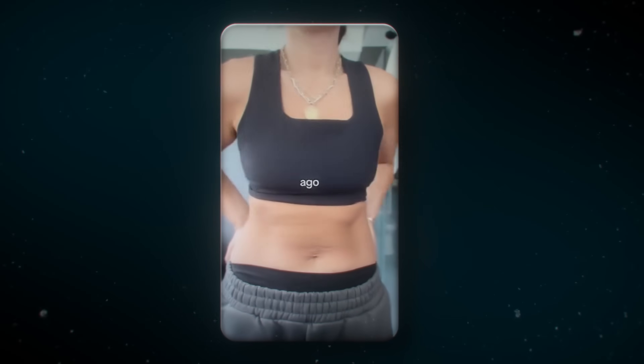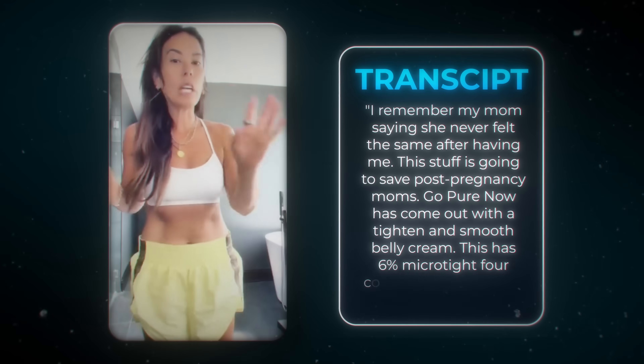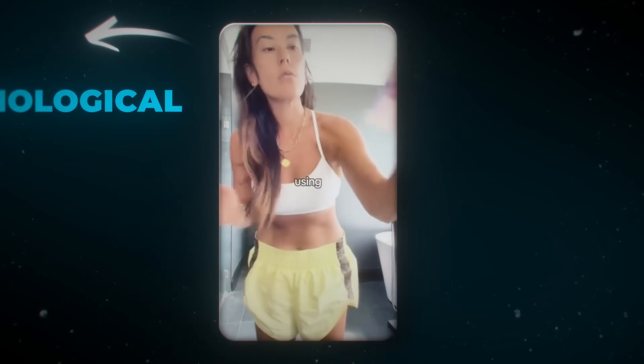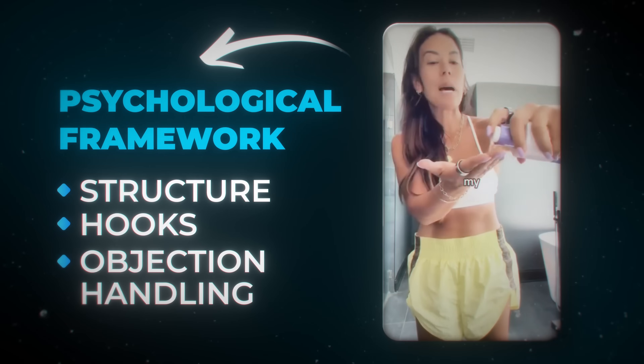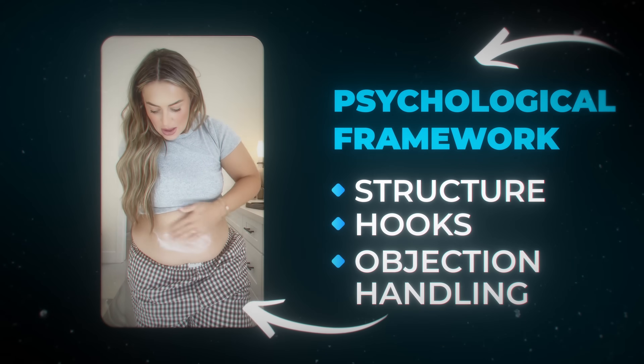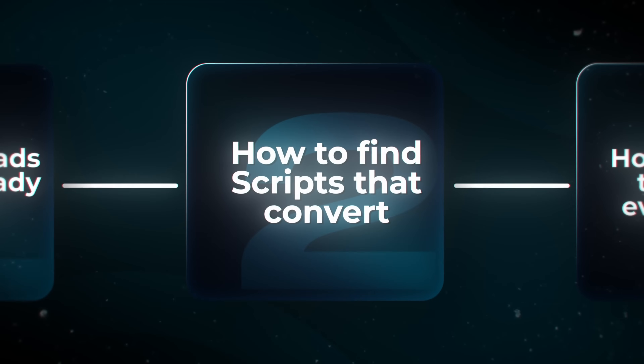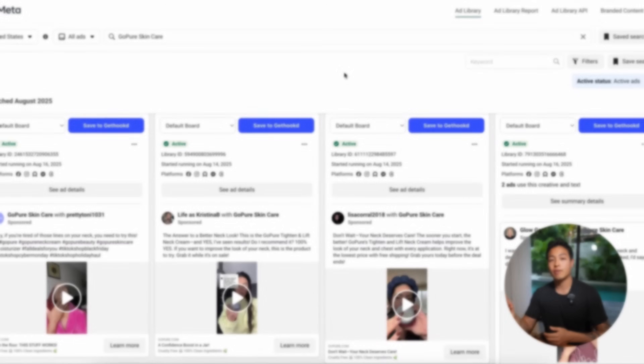Here's where people completely mess up: they find that winning ad and then just try to copy it word for word. That is not what you want to do, because you're likely selling a different product to a different audience. And also Facebook, TikTok, and all these platforms don't like when you do that anyway. Instead, we want to extract the psychological framework — the structure of the hooks, the objection handling — and then customize it for our specific product and customer.